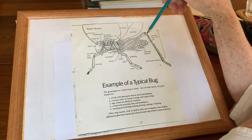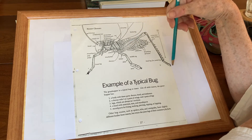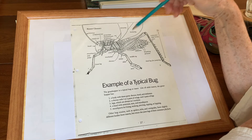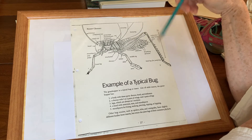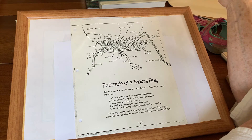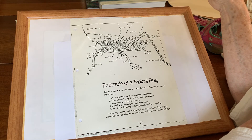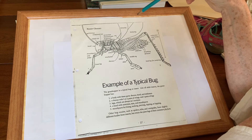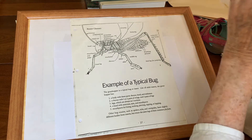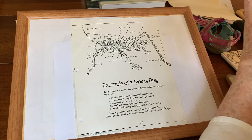Remember that the legs are not like people's legs — they have five segments to them. So you create a fantasy insect.